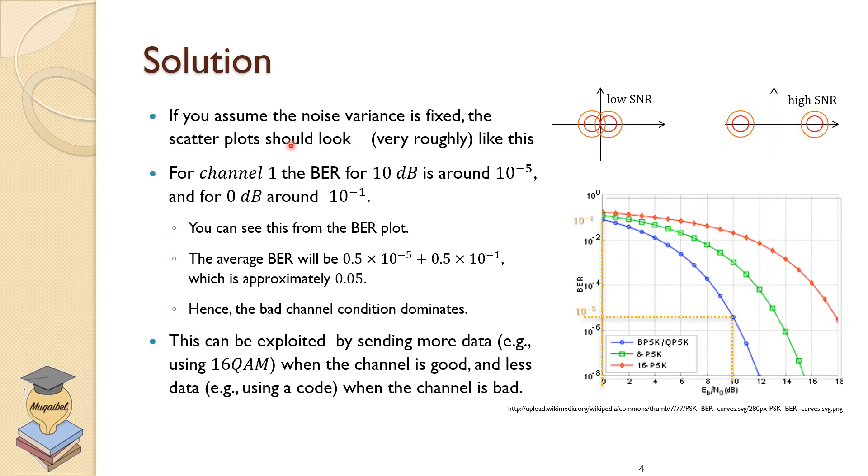If we assume that the noise variance is fixed, then the scatter plot should look roughly like this. For example, we are sending binary phase shift keying or BPSK. In the case of low signal to noise ratio, the circles are close to each other, while in the case of high signal to noise ratio, the circles would be away from each other.